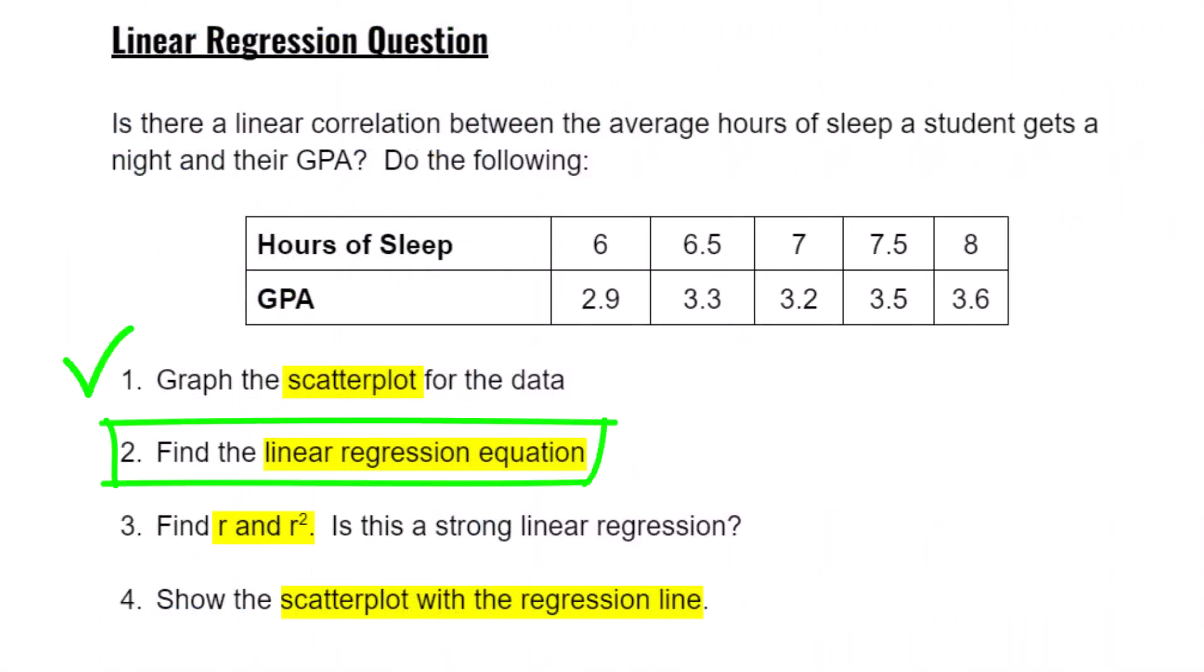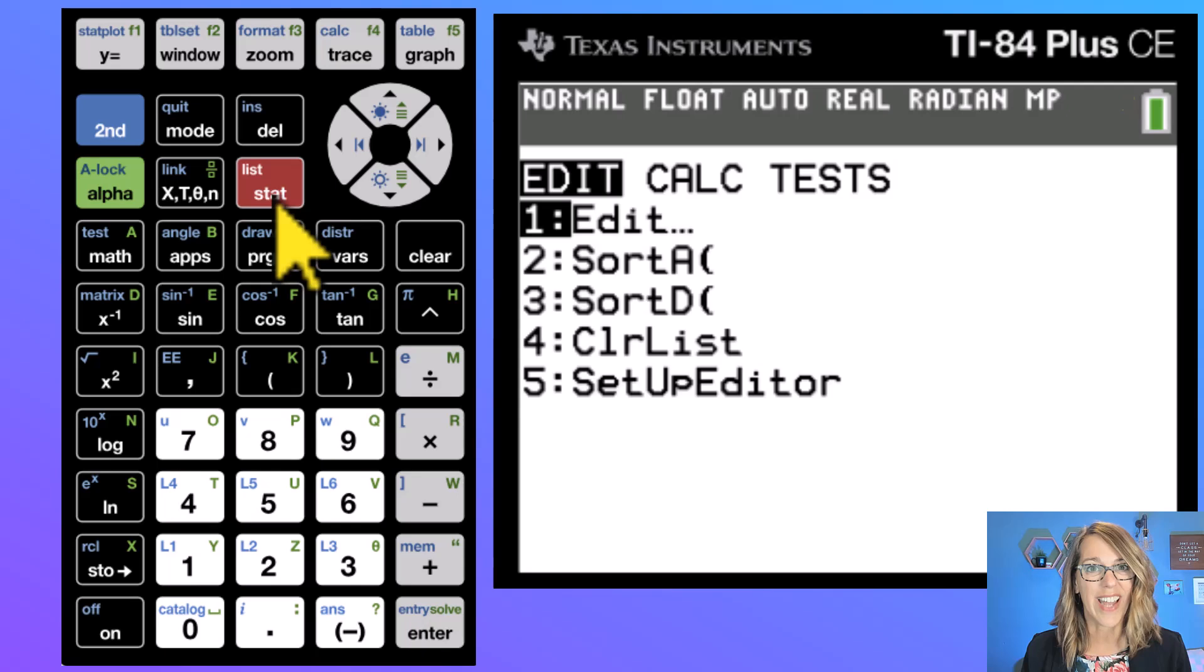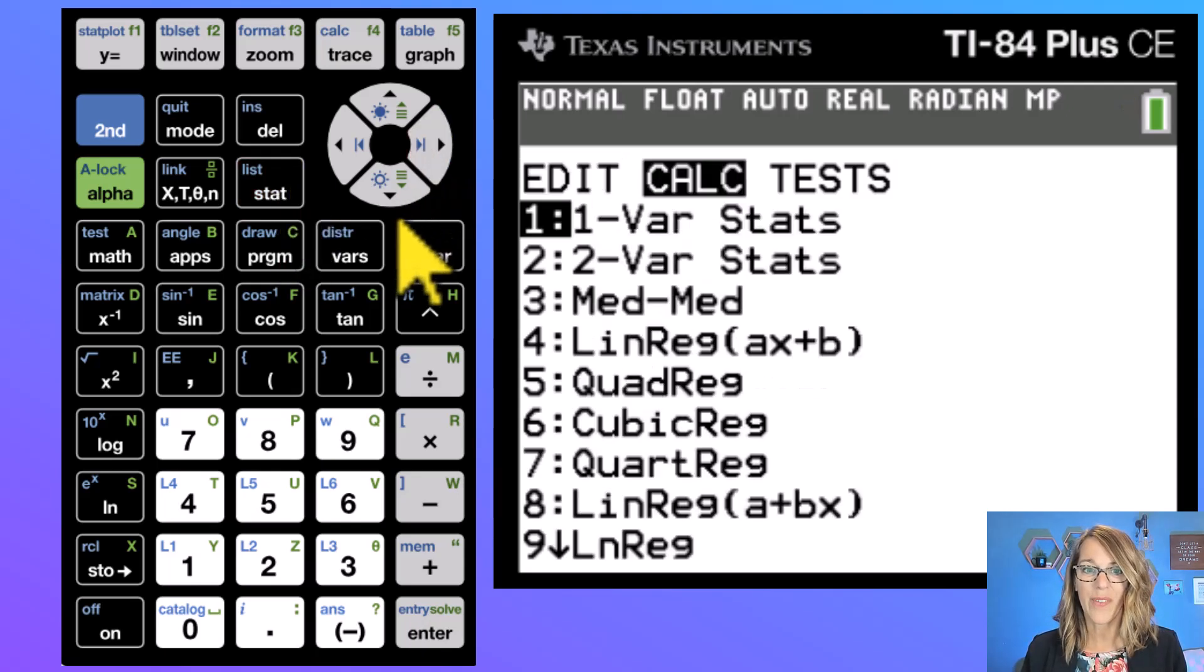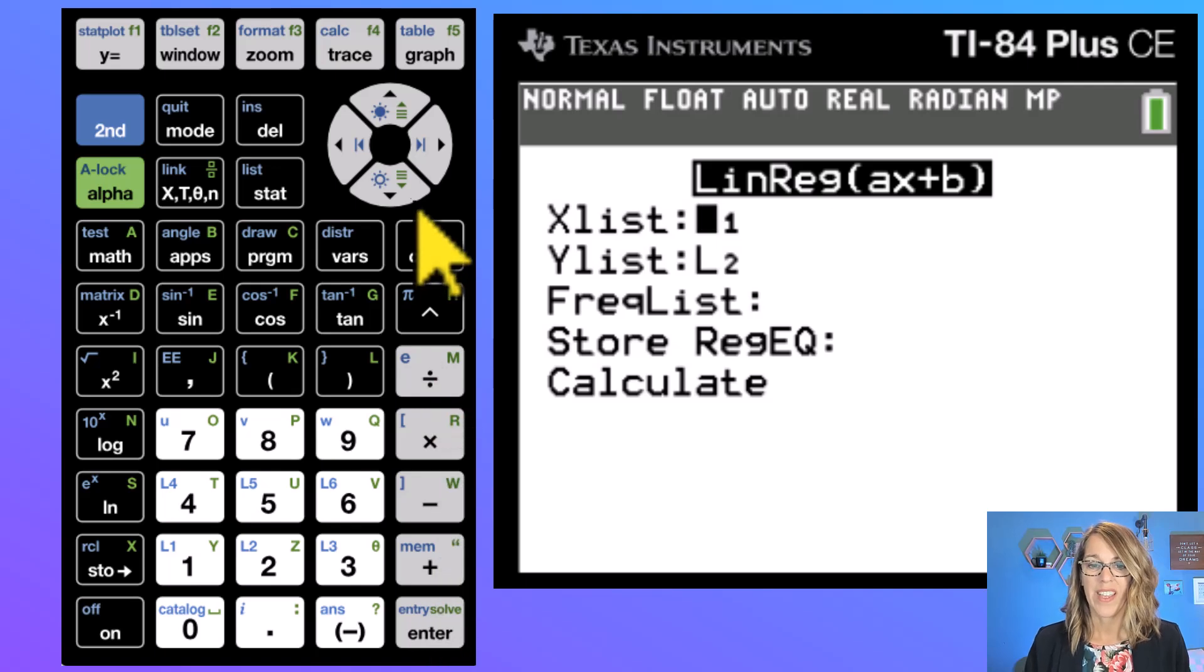Let's go ahead and do task number two. For task number two we wanted to run that linear regression. Let's leave the graph. So I'll do second followed by quit and I want to go back to that stat menu, but this time we want calc and I'm looking for that linear regression. There are two of them. Take a look at number four and number eight. They're exactly the same just in a different order.